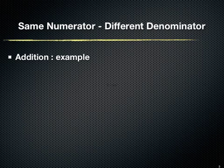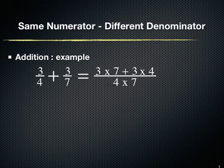To demonstrate addition, I have taken two fractions: 3 upon 4 and 3 upon 7. To perform addition, the numerator will be obtained by adding the multiplication of the first fraction's numerator with the second fraction's denominator, with the multiplication of the second fraction's numerator with the first fraction's denominator. The denominator will be the multiplication of the two denominators.